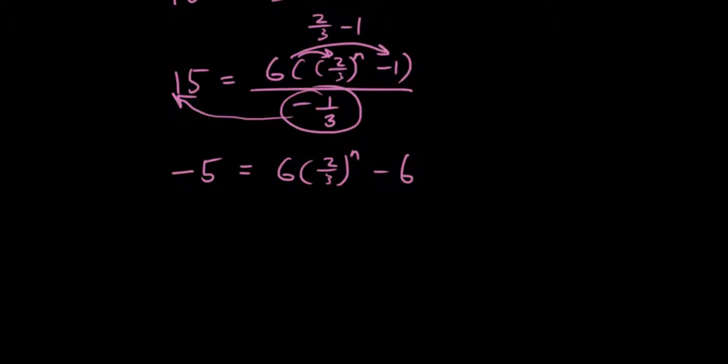And I'm going to move the minus 6 to the other side. So it's minus 5 plus 6, which is 1. So 1 equals 6 times 2 over 3 to the power of n. Move the 6 to the other side. So it's 1 over 6 equals 2 over 3 to the power of n.